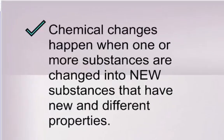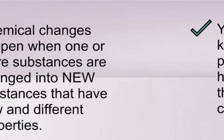Chemical changes. So we had properties, properties that ID a substance. Now, chemical changes happen when one or more substances are changed into new substances. And they have totally new and different properties. You can see that it's totally changed into something else.